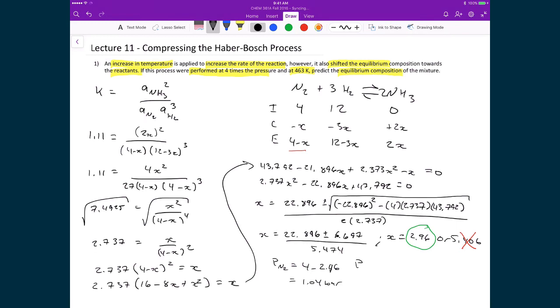I have a partial pressure of hydrogen gas, which is equal to 12 minus 3 times 2.96, which gives me a value of 3.12 bar.